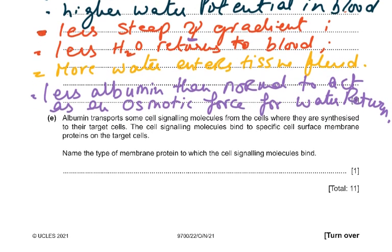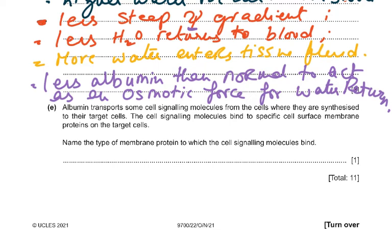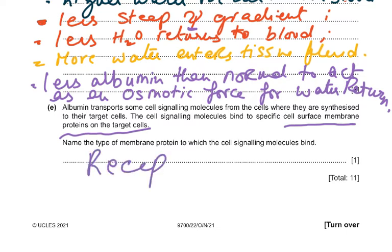Part E: albumin transports cell signalling molecules from the cells where they are synthesised to their target cells. The signalling molecules bind to specific cell surface membrane proteins in the target cell. The answer is simply: cell surface receptors.